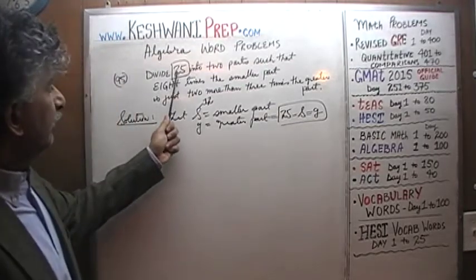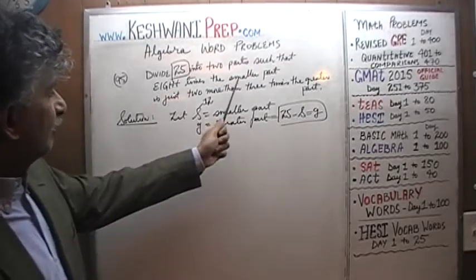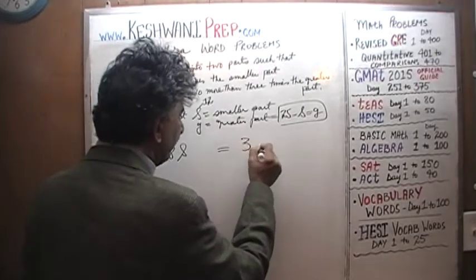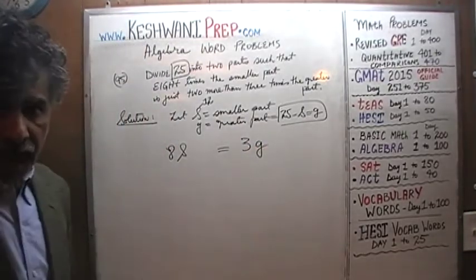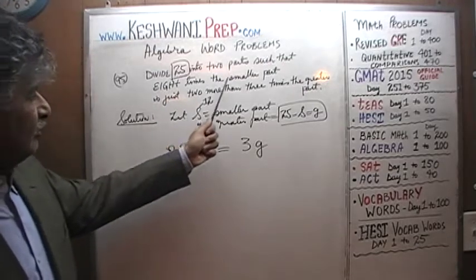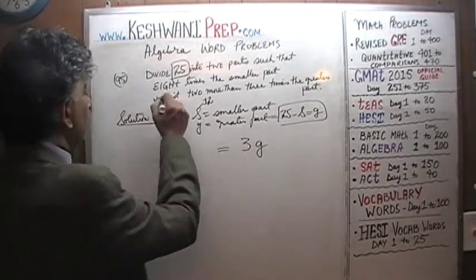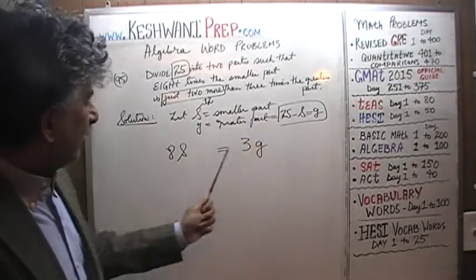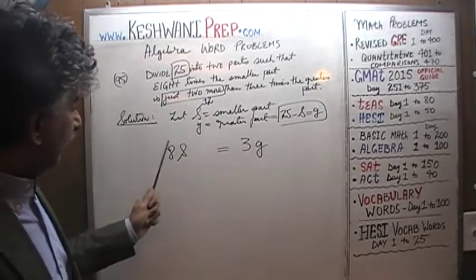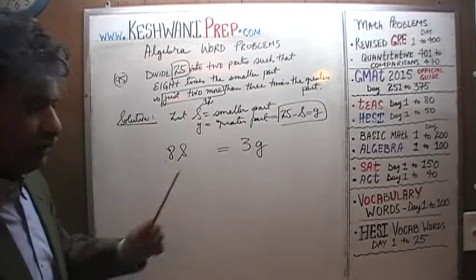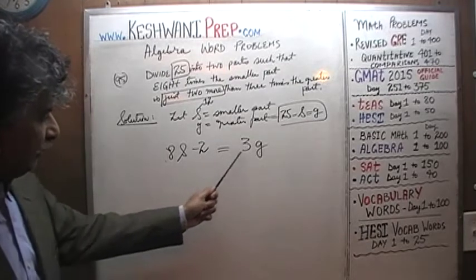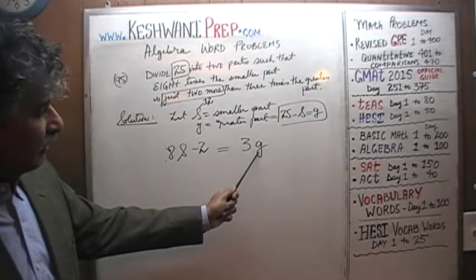So we have to divide 25 into two parts — the smaller part S and the greater part — such that 8 times the smaller part equals 3 times the greater part. But wait, does the problem say that? Let's read one more time. It says 8 times the smaller part is just 2 more than 3 times the greater part. So this quantity is 2 more than that quantity. To put an equals sign, we subtract 2 from the left side. Then we substitute the greater part as 25 minus S.